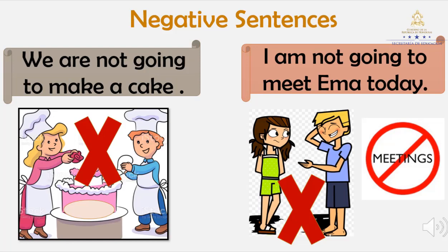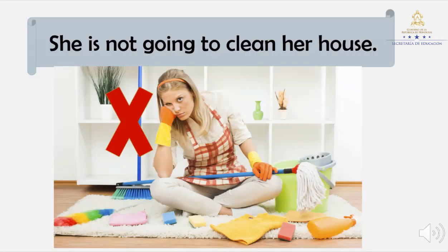Next example: I am not going to meet Emma today. Repeat please: I am not going to meet Emma today. One more time: I am not going to meet Emma today. She is not going to clean her house. She is not going to clean her house. Good.